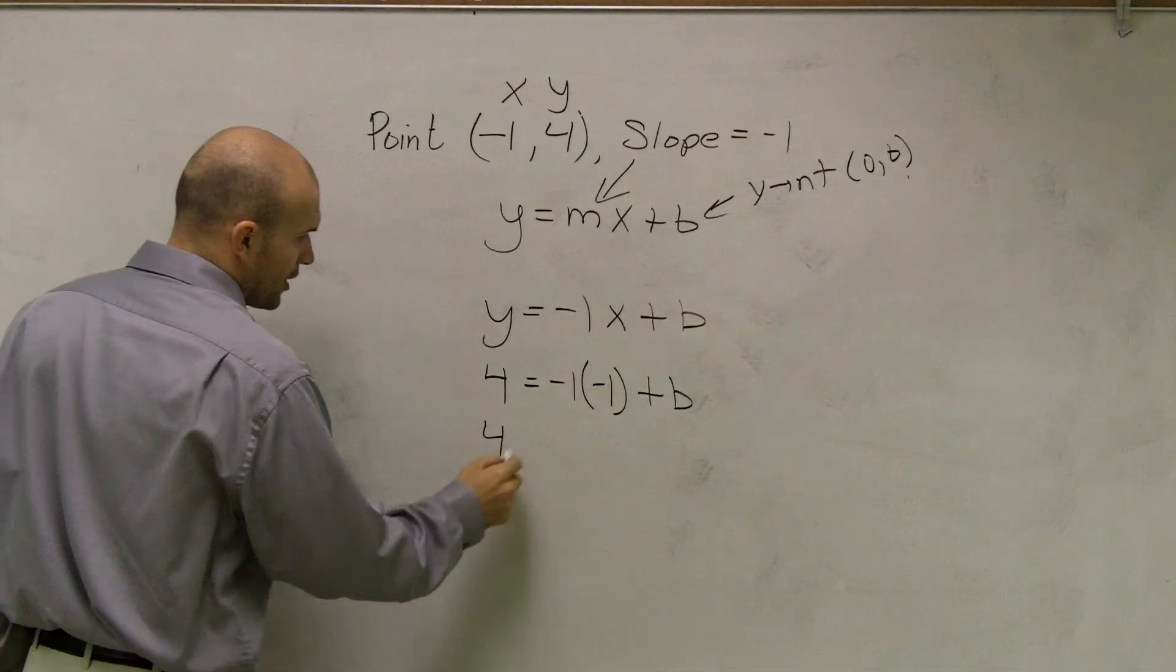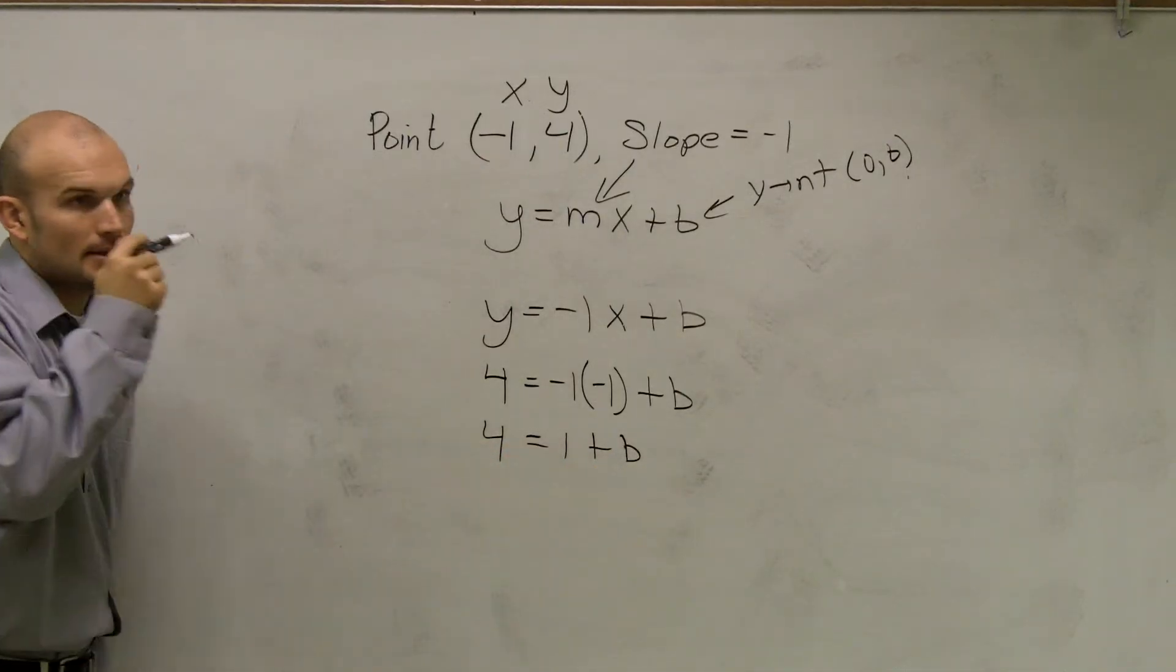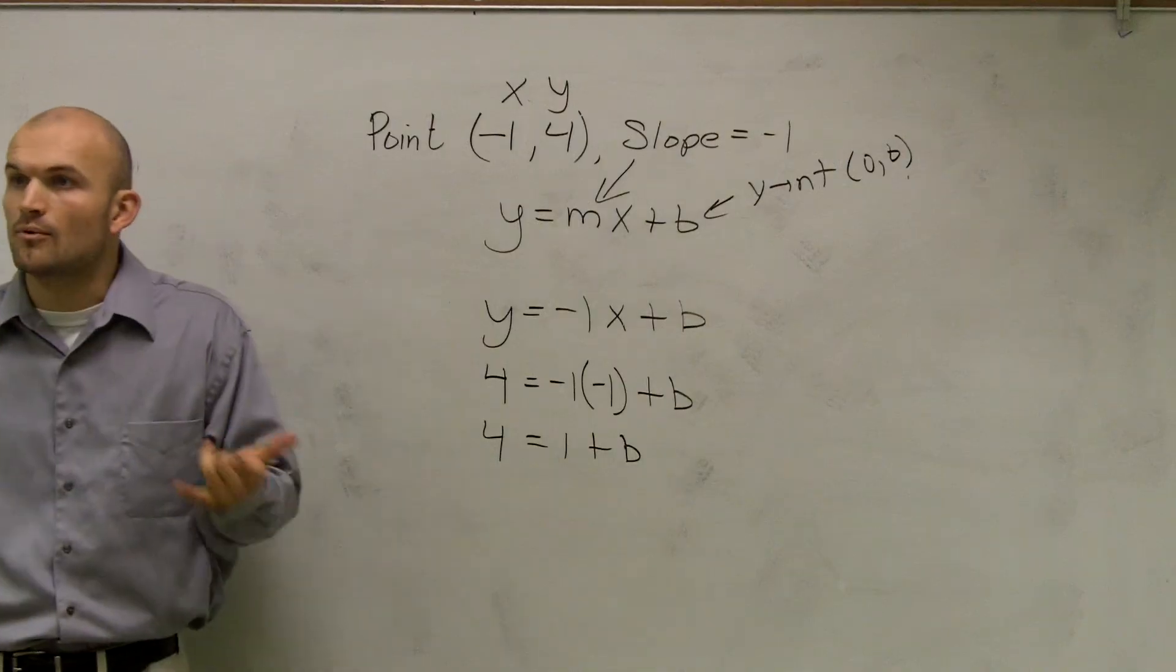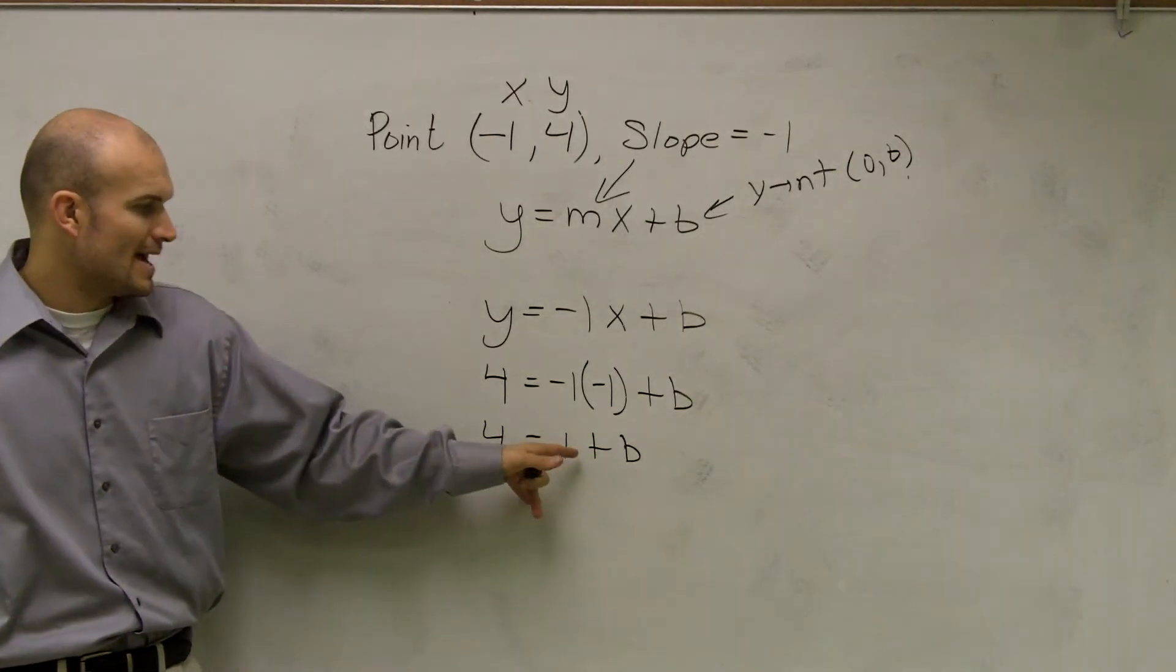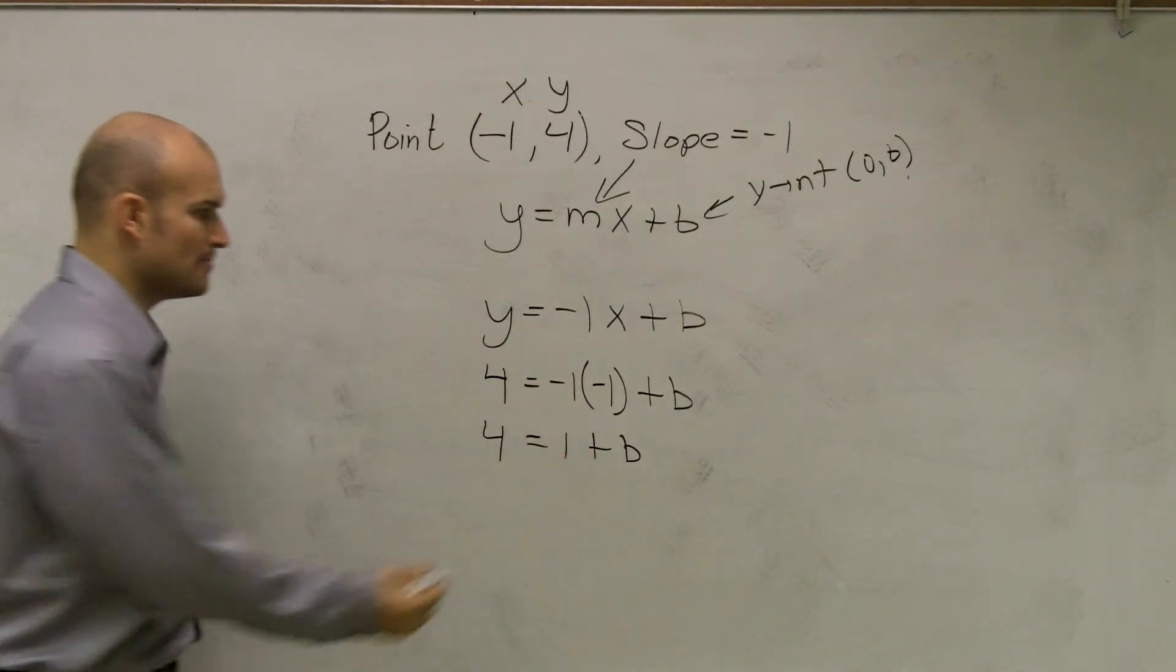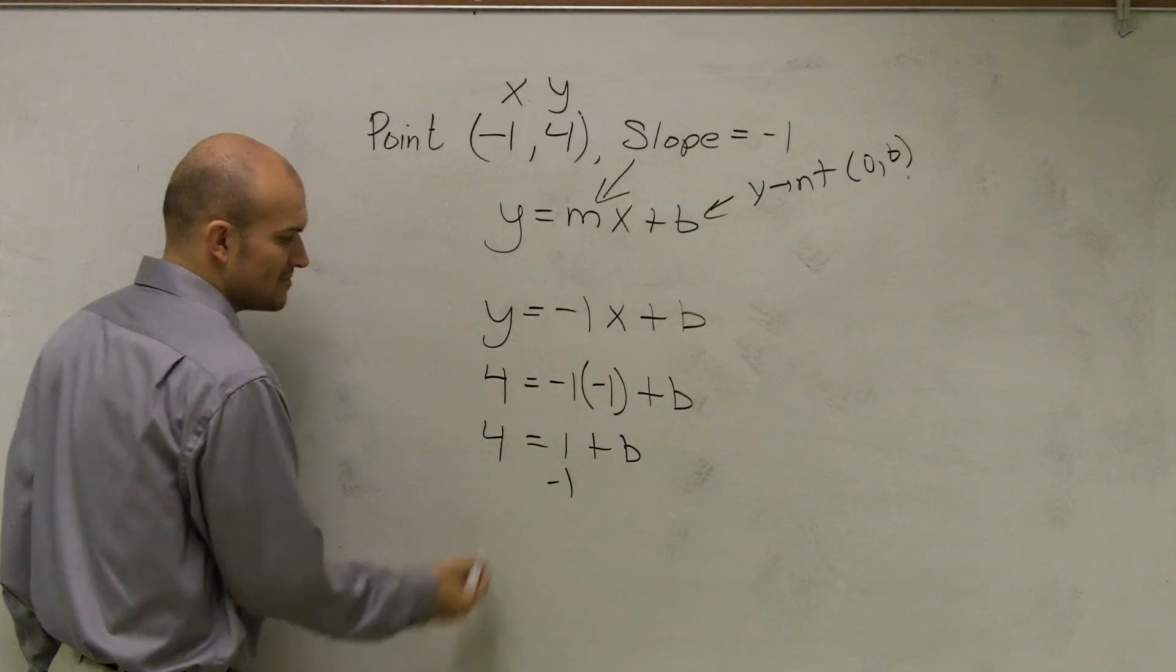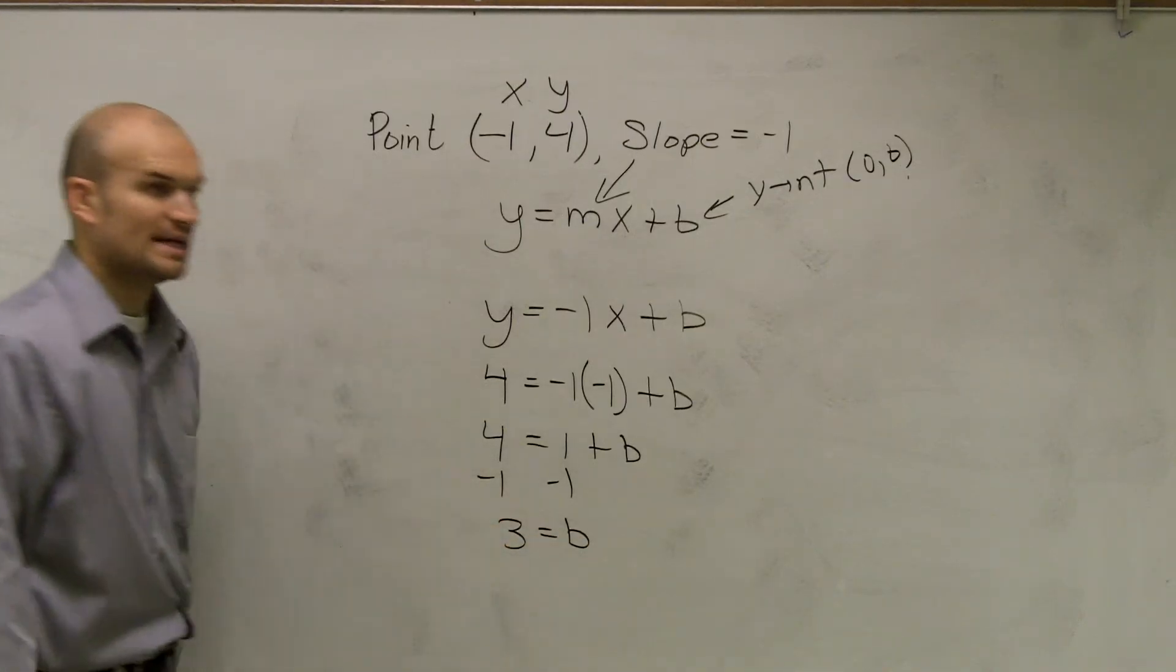So now we say 4 equals 1 plus b. Now, guys, remember, we have to figure out what our y-intercept is. We don't know what the y-intercept is. So I have to solve for b. So to get rid of my 1 with my b, this 1 is being added to b, so I'm going to subtract one. So I have 3 equals b.